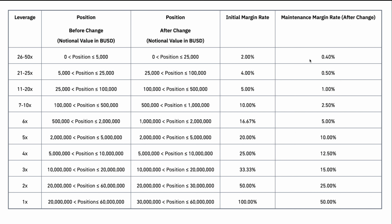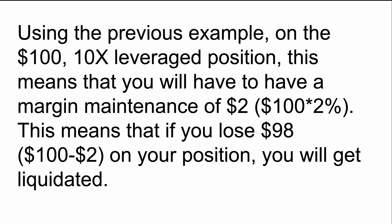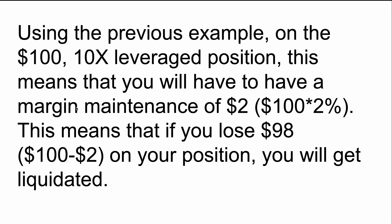Using that Binance table, we can figure out how much you would need to maintain, which is basically your initial amount times your leverage times your margin requirement percentage. So using the previous example of $100 at 10x leverage, this means you're going to have to have a margin maintenance of $2, which is $100 times 2%, as you can see from their table — the 2% for a position sized between $0 and $5,000. This means that if you lose $98, which is the $100 minus the margin maintenance of $2, then you're going to get liquidated.